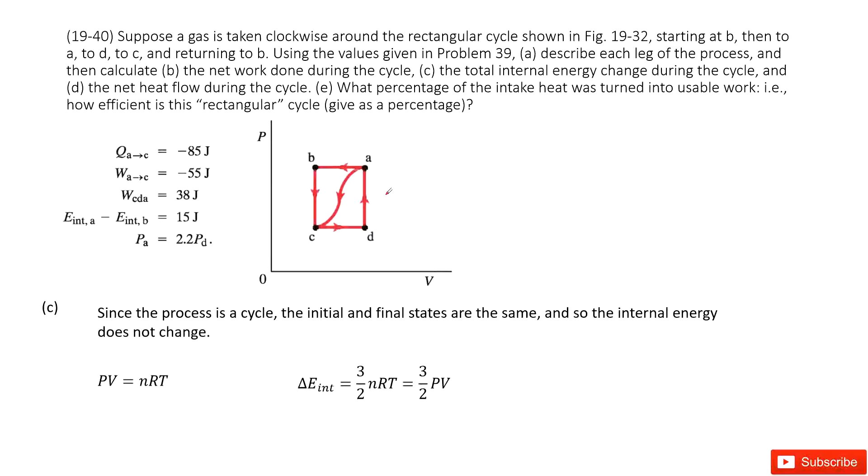The next part asks what is the total internal energy change. In this case, we can see from B to A to D to C, coming back to B. Did the P and V change? No. It's at the same point. So P is not changed, V is not changed.